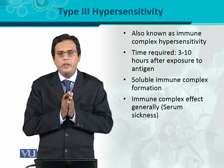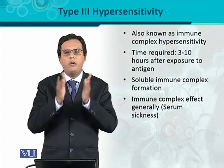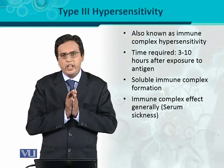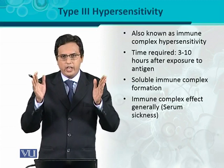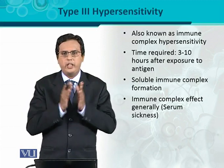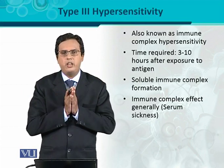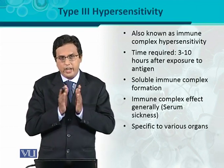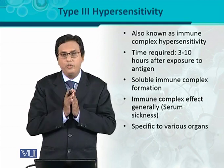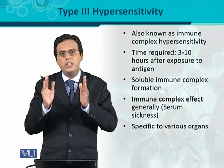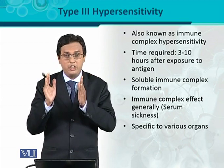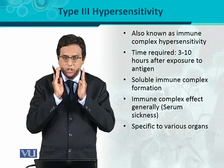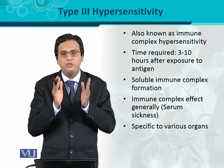This immune complex can generally damage all parts of the body. That means there is a very important condition called serum sickness, where the immune complex can fix at any site in the body and cause damage to tissue there. On the other hand, the immune complex can also be specific to various organs — depositing only on specified organs — because when it precipitates from soluble form and binds to a surface of specific tissue cells, it causes specific deposition.